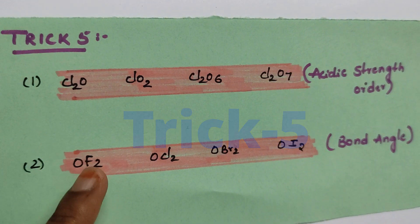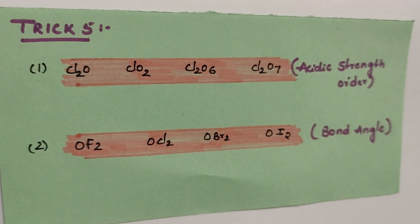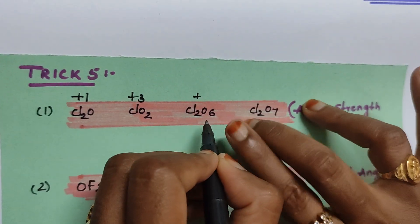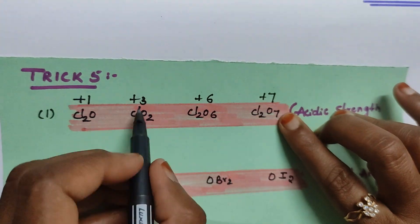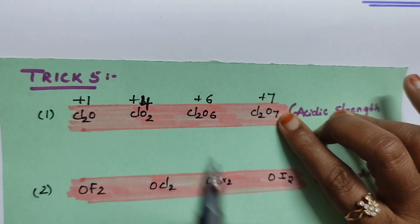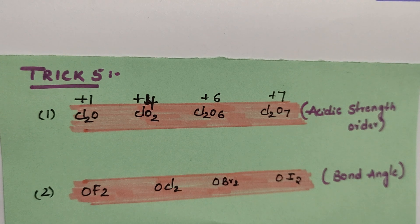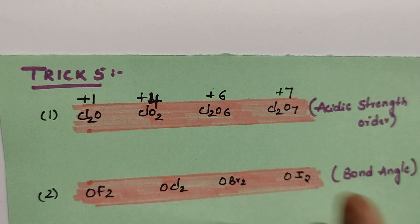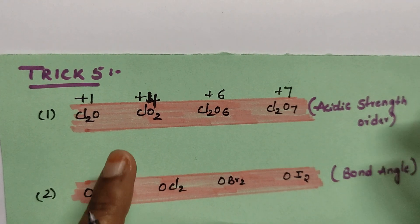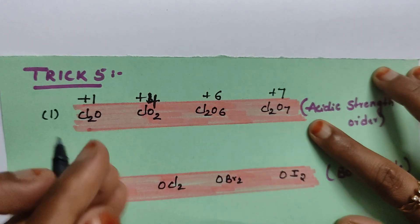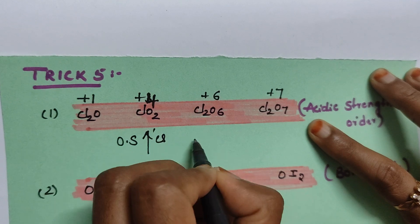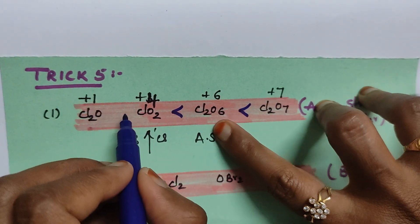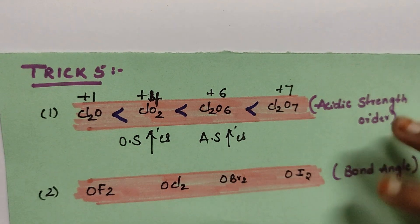Coming to trick number five: Cl2O, ClO2, Cl2O6, Cl2O7 — they're asking the acid strength order. What you need to do is first find the oxidation state of the central atom. For Cl2O7, it is +7. As the oxidation state of the central atom increases, acidic strength also increases. So Cl2O7 has the most acidic strength, then Cl2O6, and so on in that order.